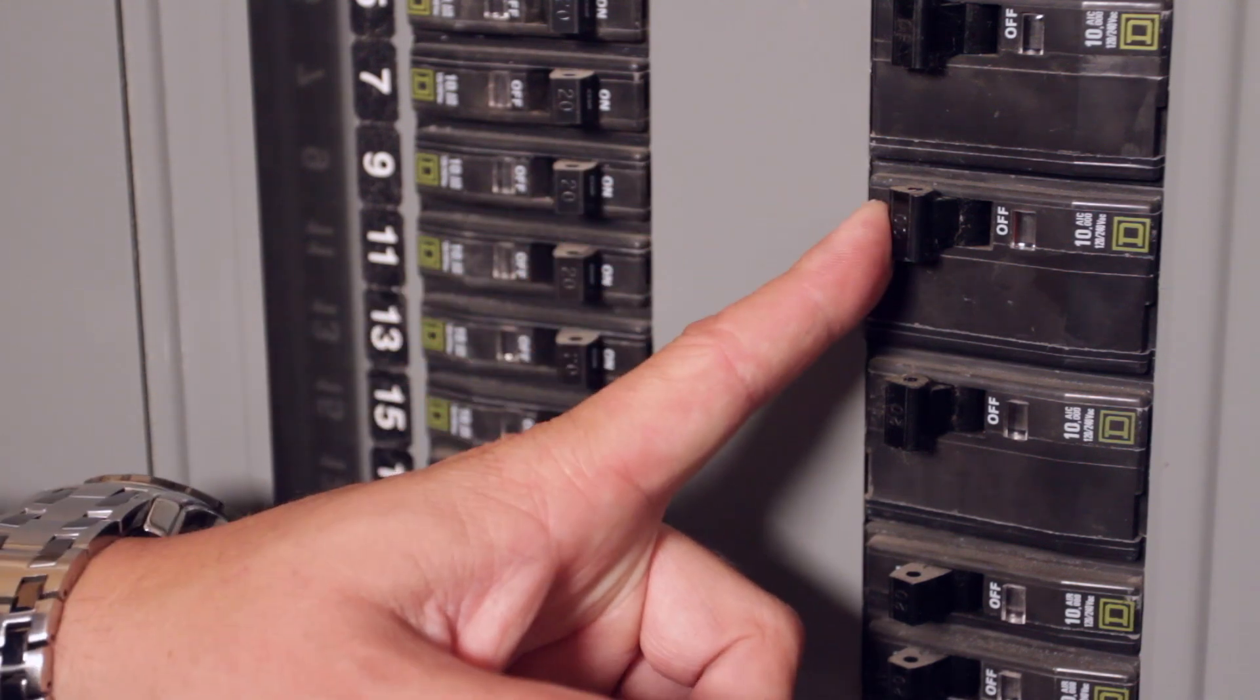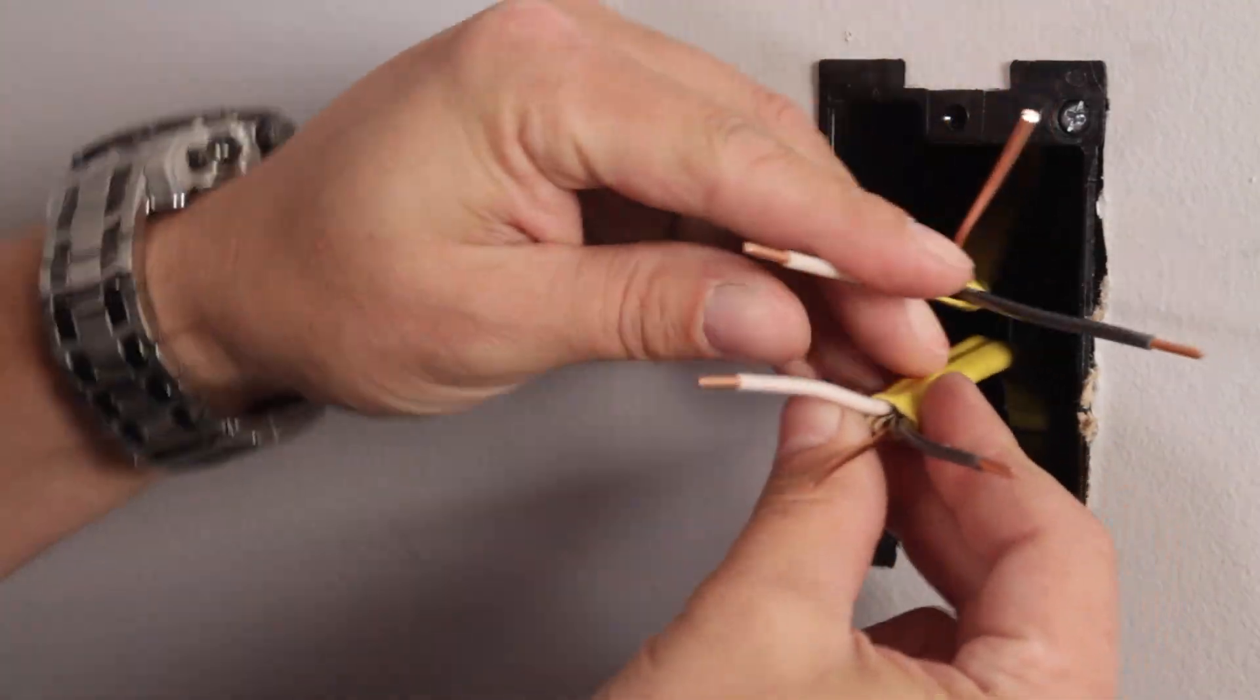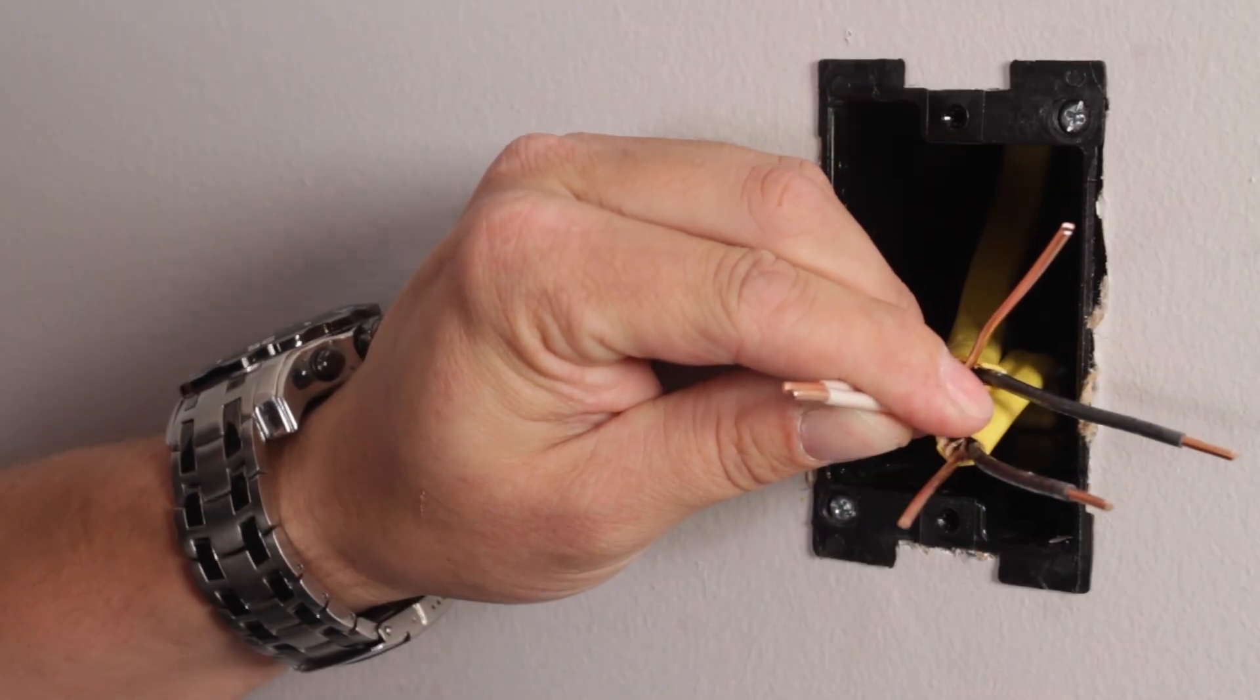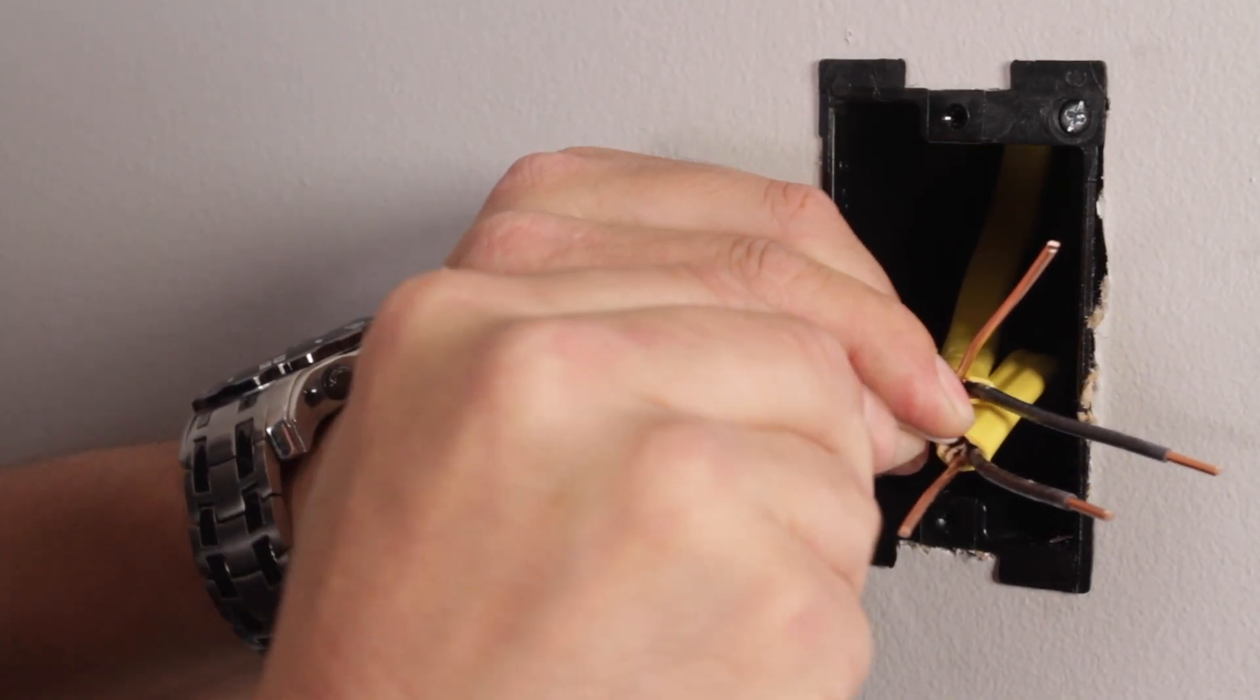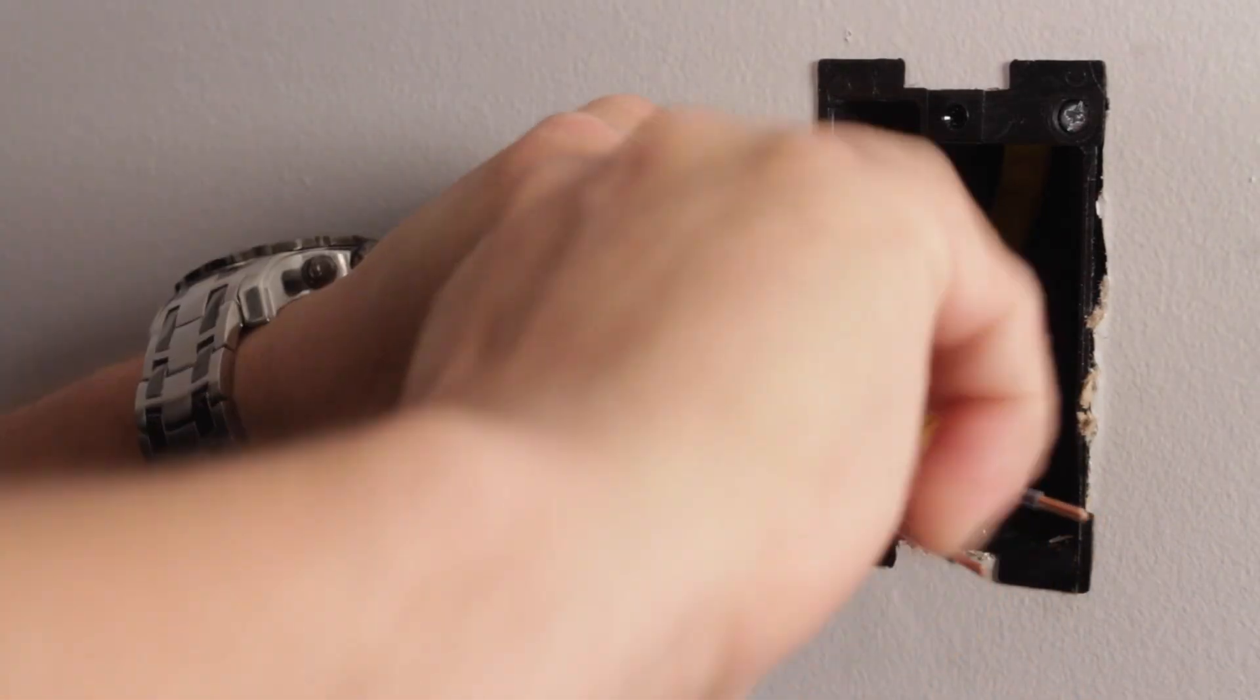Before you do anything else, you're going to want to turn your breaker off. So first, you're going to connect the white wires together coming out of the J-Box with a wire nut. Now connect the bare copper ground wires together using a wire nut.